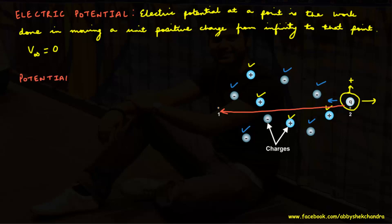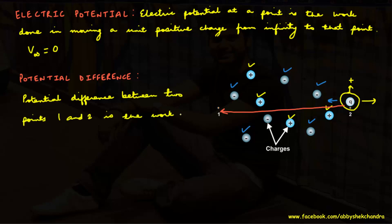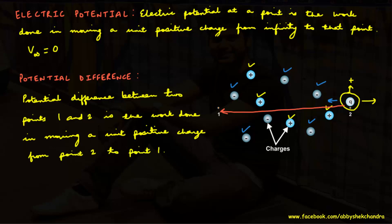Potential difference between two points is more commonly used than potential at a point. Potential difference between points 1 and 2 is the work done in moving a unit positive charge from point 2 to point 1. If W is the work done in moving charge q from point 2 to point 1, the potential difference V between points 1 and 2 is given by V1 minus V2 = V = W divided by q.